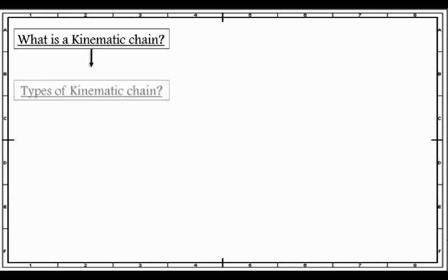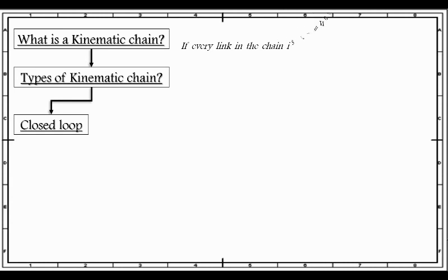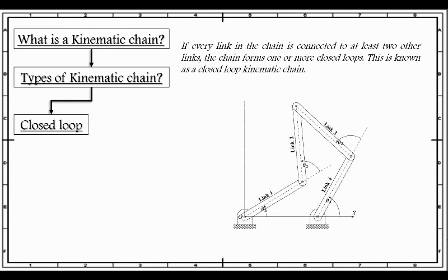Next, let's discuss how many types of kinematic chains there are. There are basically two types. The first is the closed loop kinematic chain. If every link in a chain is connected to at least two other links, the chain forms one or more closed loops. As we can see in the figure, all the links are connected to at least two other links. For example, link one is connected to link two and link five. Similarly, link two is connected to link one and link three, link three is connected to link two and link four, and link four is connected to link three and link five.